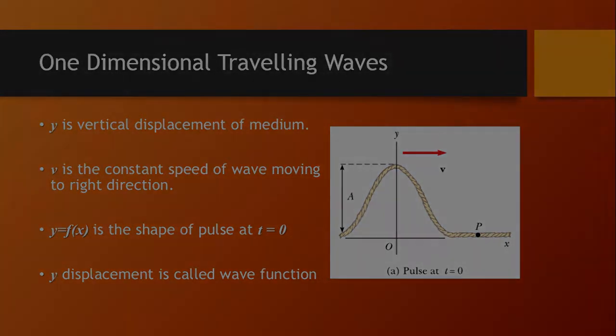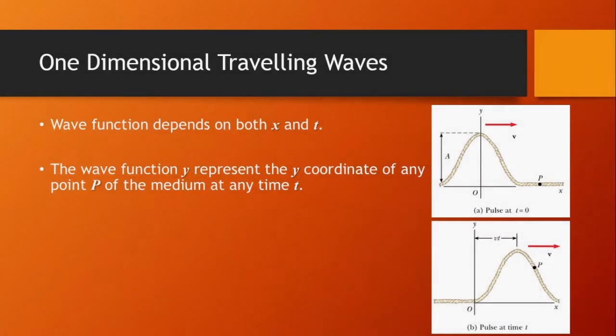Consider a particular point P on this string, identified by a specific value of its x coordinate. Before the pulse arrives at P, the y coordinate of this point is zero. As the pulse passes, the y coordinate of this point increases, reaches a maximum point, and then decreases to zero. Therefore, the wave function y represents the y coordinate of any point P of the medium at any time t.